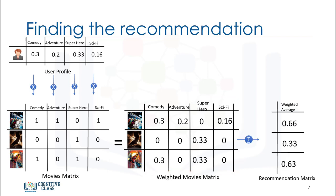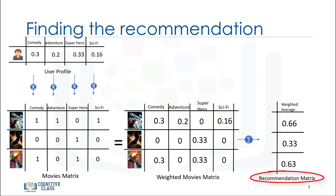Now, if we aggregate these weighted ratings, we get the active user's possible interest level in these three movies. In essence, it's our recommendation list, which we can sort to rank the movies and recommend them to the user. For example, we can say that the Hitchhiker's Guide to the Galaxy has the highest score in our list and is proper to recommend to the user.